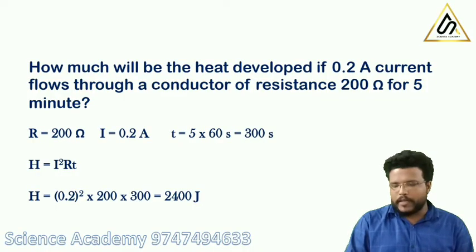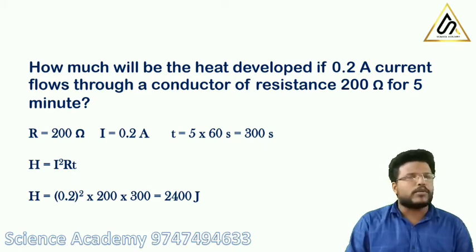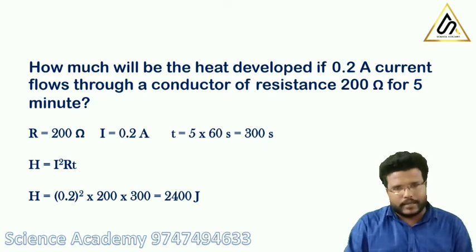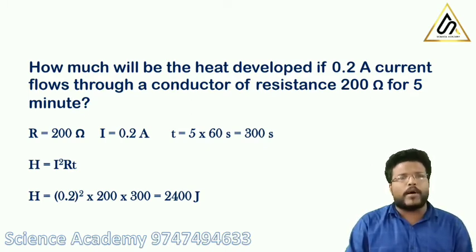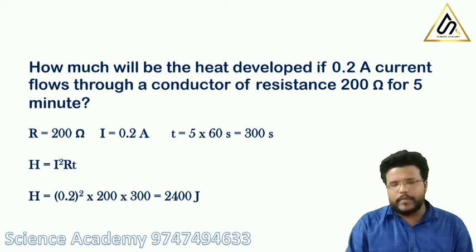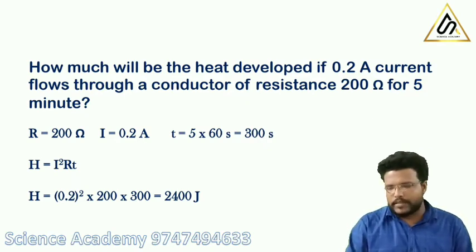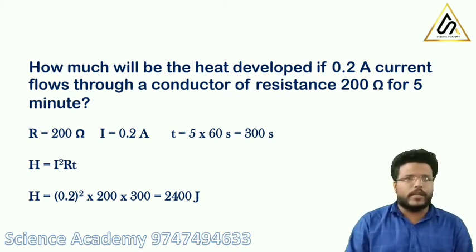How much heat will be developed if 0.2A current flows through a conductor of resistance 200 ohm for 5 minutes? The current I is equal to 0.2A, resistance is 200 ohm, and time is 5 minutes. Since SI unit is seconds, 5 minutes equals 5 into 60, which is 300 seconds.